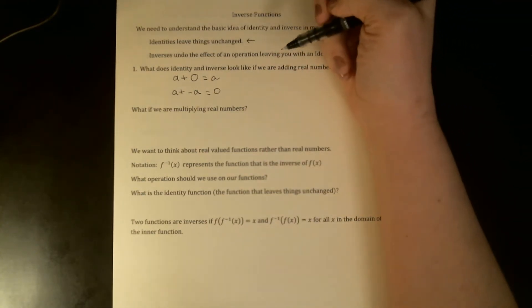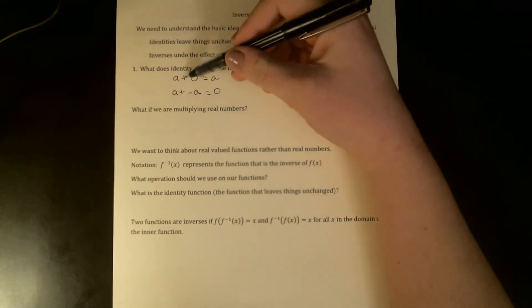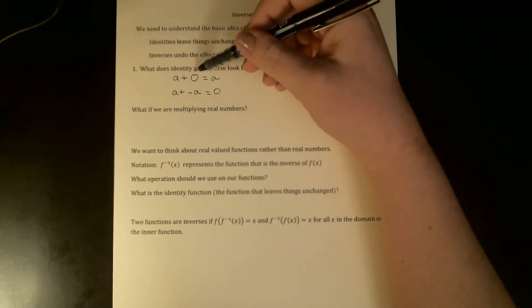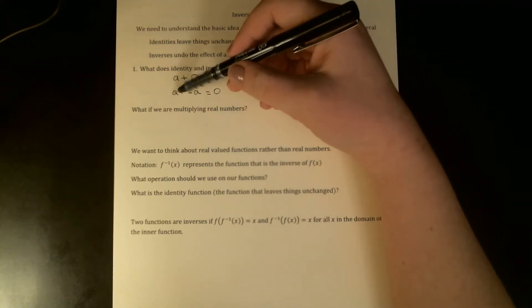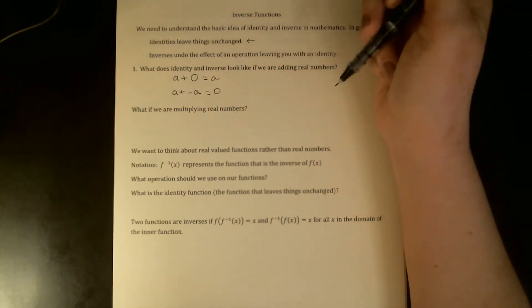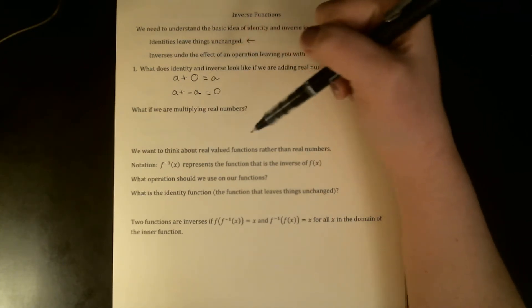Notice we've chosen what we're working with—real numbers. We've chosen an operation—addition—and there is one single identity thing that we are working with. Every single real number will have its own inverse. So depending on whether you're starting with two or negative five or one-third, each of those has its own inverse.